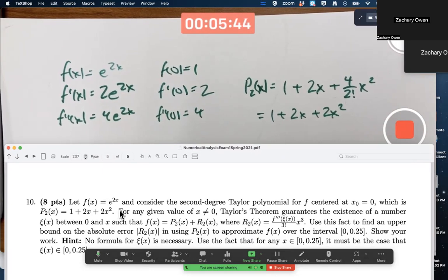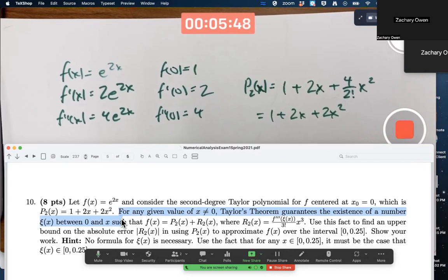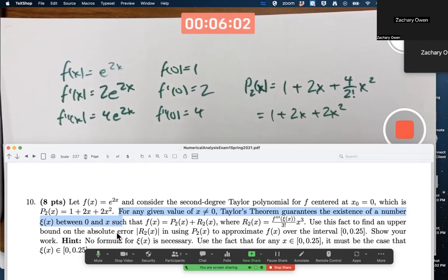What about Taylor's theorem? For any given value of x not equal to zero, Taylor's theorem guarantees the existence of a number xi of x, and since x could be different, this really is a function of x as we saw last Thursday. Between zero and x, x by the way doesn't have to be positive, it could be negative, such that f of x is the Taylor polynomial p2 plus the remainder term.